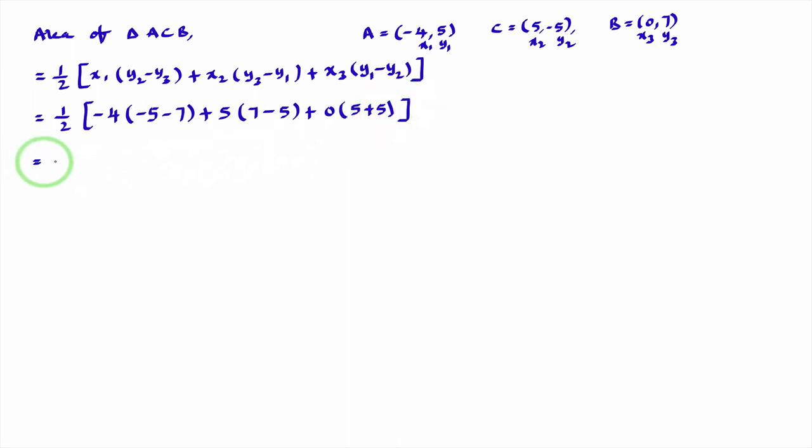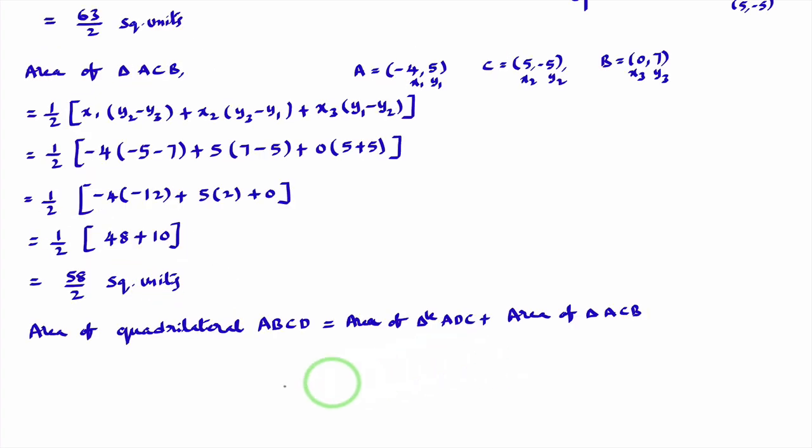That equal to 1 by 2 into minus 4 into minus 5 minus 7 is minus 12. Plus 5 into 7 minus 5 is 2. Plus 0 into 10 is 0. That equal to 58 divided by 2. 58 by 2 square units.